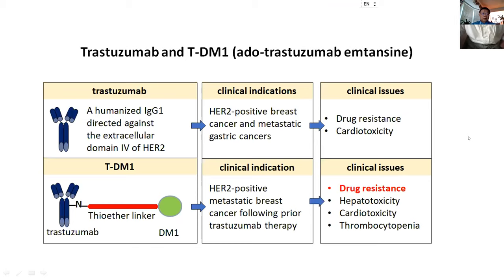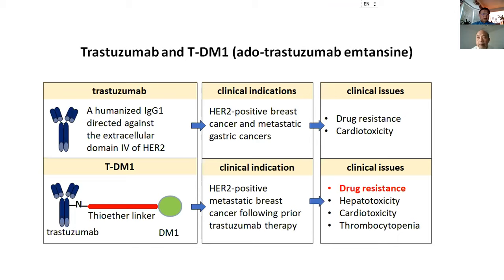Another name for TDM1 is ado-trastuzumab emtansine. It's an antibody-drug conjugate consisting of a monoclonal antibody — in this case Herceptin or trastuzumab — conjugated with the drug DM1, which is a microtubule inhibitor. These two molecules are joined into a single molecule through a linker; in this case they use a thioether linker.